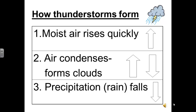In the storm's final stage, all the currents are moving downward, and the clouds get smaller as precipitation falls. Remember from the last chapter that condensation and precipitation of thunderstorms are parts of the water cycle.